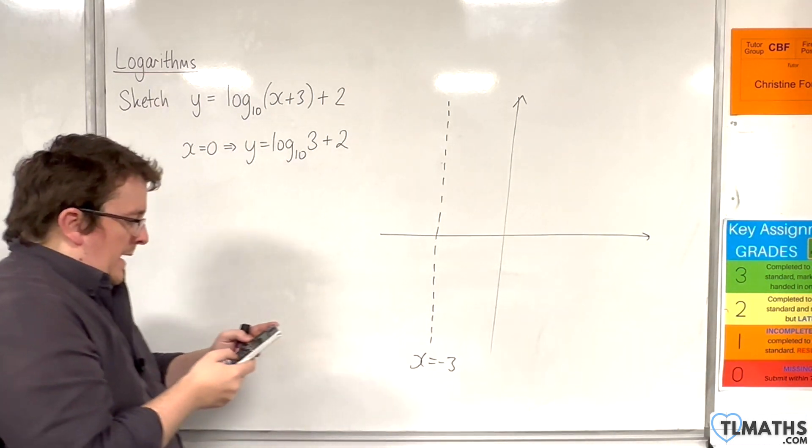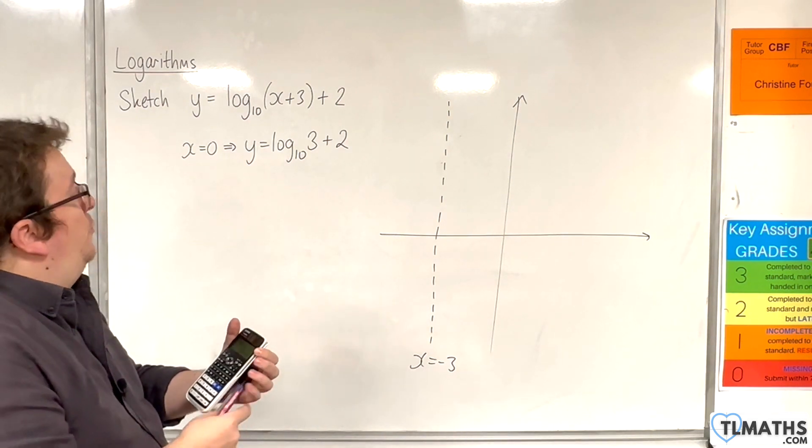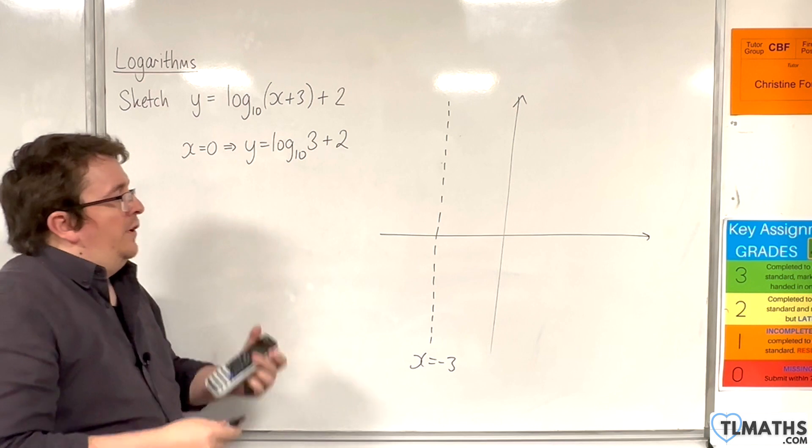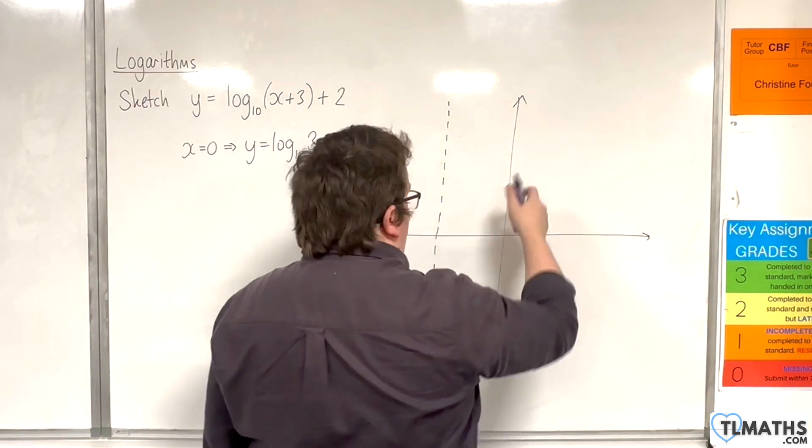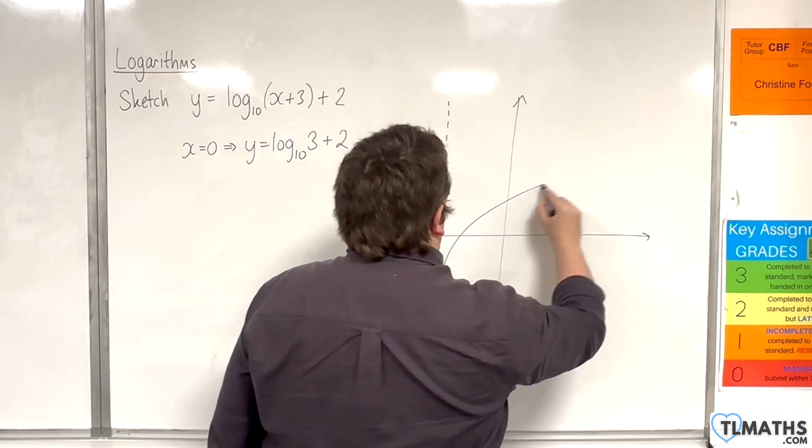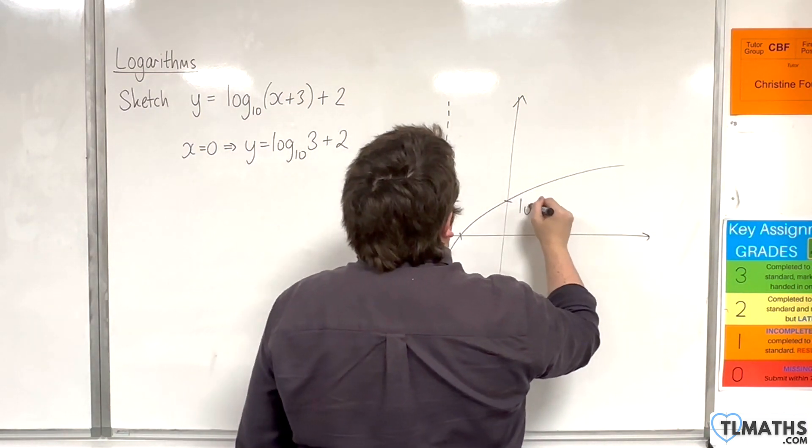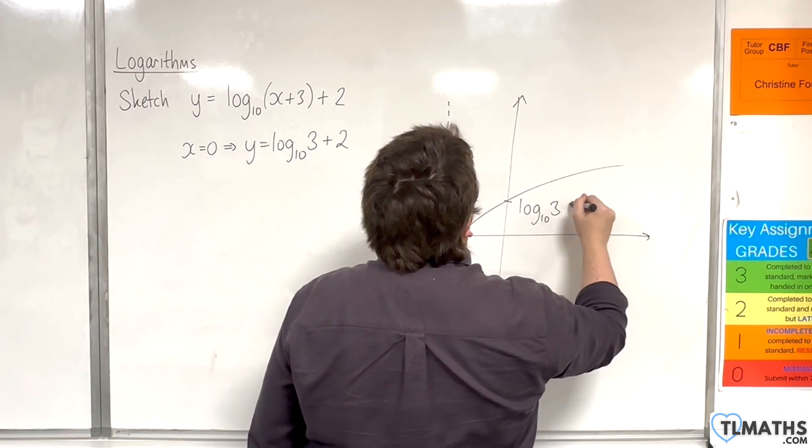So log base 10 of 3 plus 2 is 2.477. So that means we're crossing up here. Drawing our traditional looking log curve like that is perfectly fine. And that point is log base 10 of 3 plus 2.